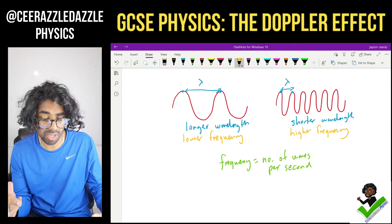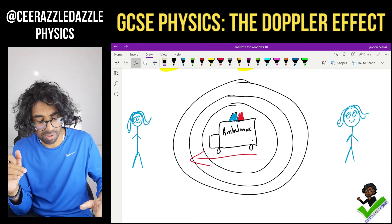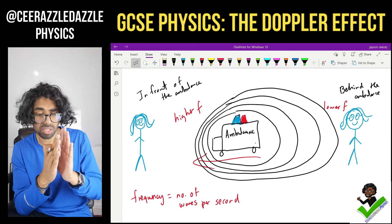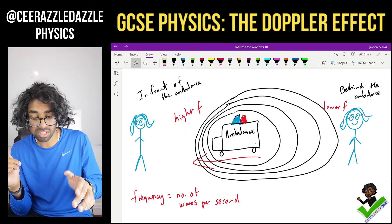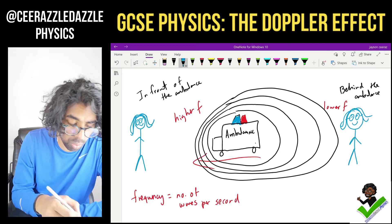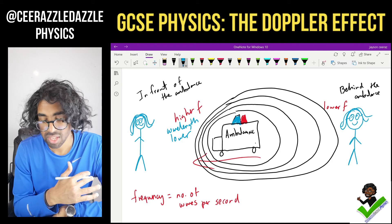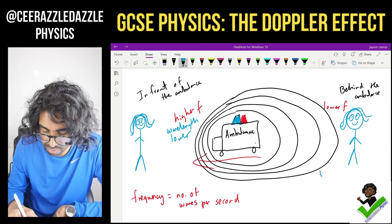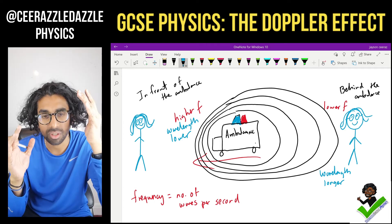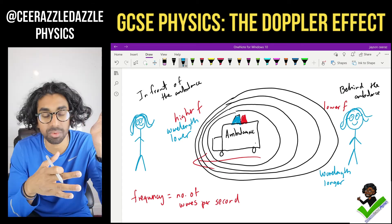Going back to the Doppler effect: when the ambulance is not moving, equal waves are formed on both sides. But if the ambulance moves towards one side, waves are compressed — so there are more waves per second, the frequency is higher. At the back, the frequency is lower because there are fewer waves per second. If the frequency is higher the wavelength is lower, and if the object is moving away from you the wavelength is longer. The Doppler effect is the apparent change in wavelength due to the relative motion between the source and the observer.